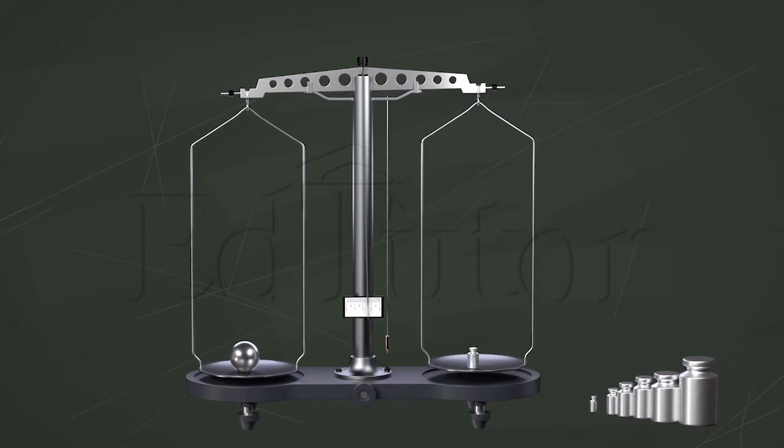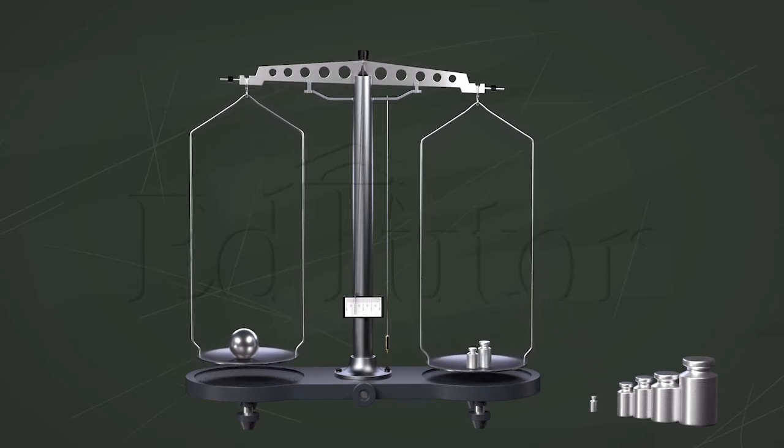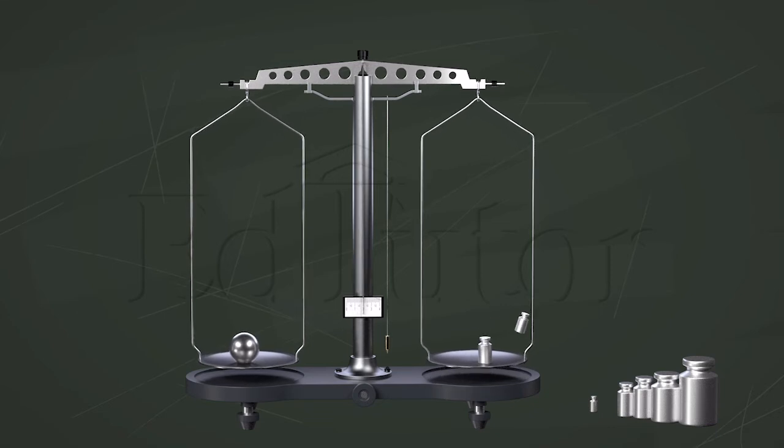We place suitable standard masses from the weight box on the right pan and either raise the beam or lower it, given whether or not the pointer is at zero.